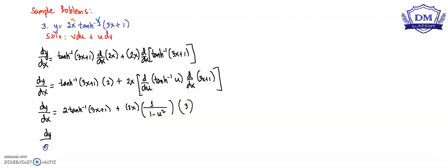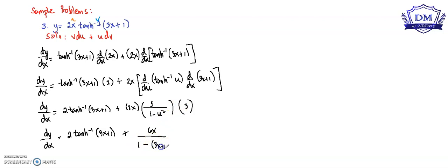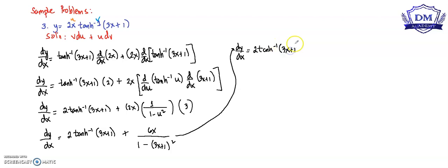So dy/dx is equal to 2 times the inverse hyperbolic tangent of (3x plus 1), plus 6x all over 1 minus (3x plus 1) squared. Expanding (3x plus 1) squared gives 9x squared plus 6x plus 1.